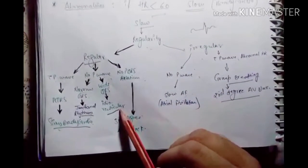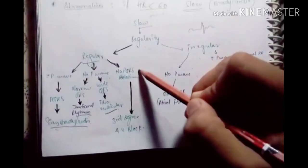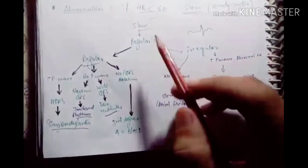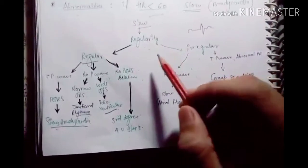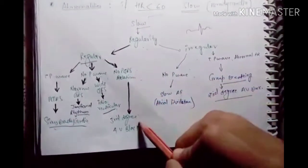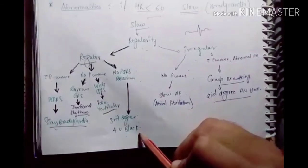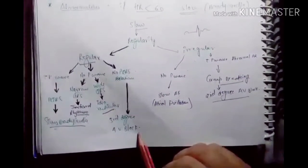If there is no PQRS relation, means one PQRS is different from another, there is no relation between them, so we consider third degree atrioventricular blockage.